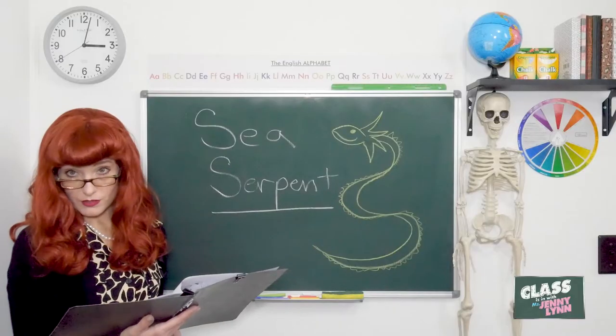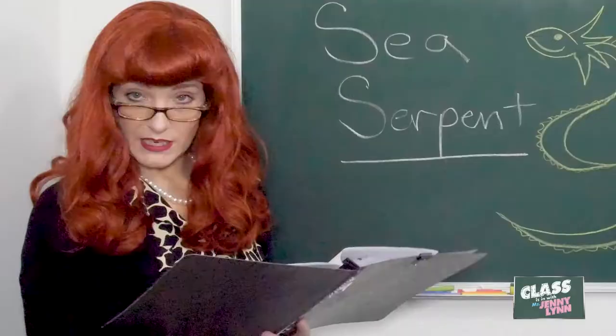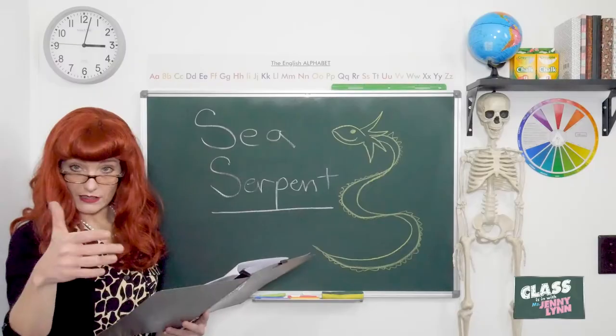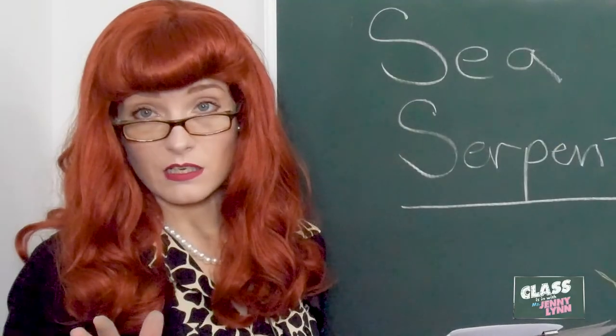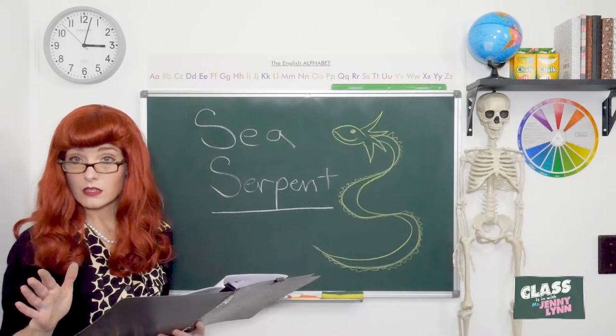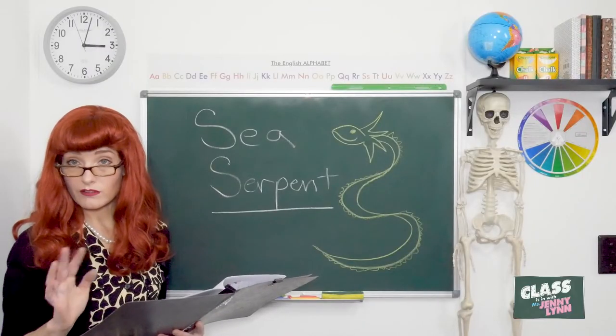They grow to be about 36 feet long and they swim kind of like a snake at the ocean surface. They do look really, really scary, but I guess they're harmless. So you don't have to worry.